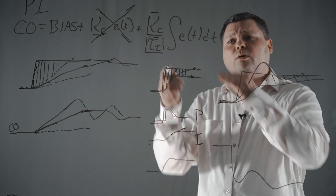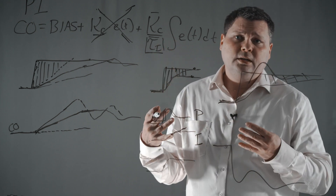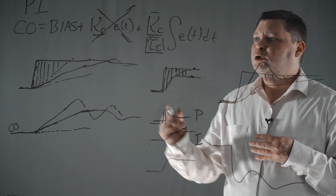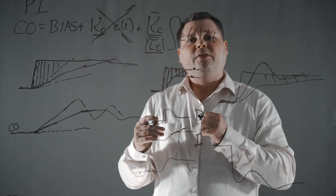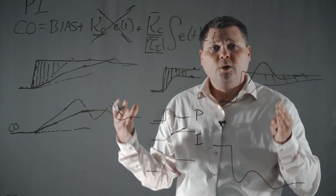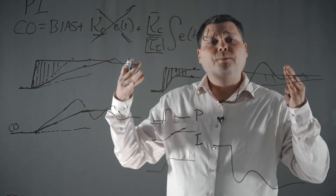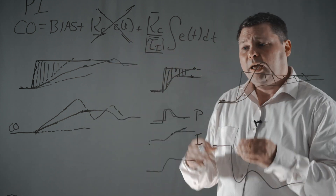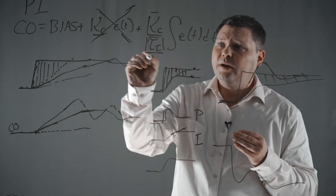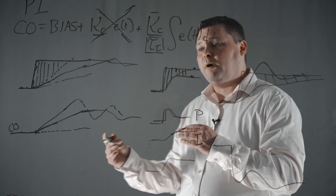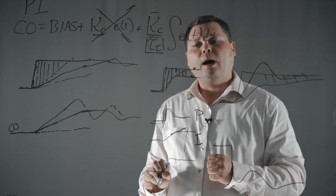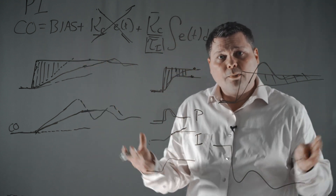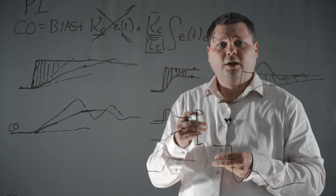You get rid of the offset, but the integral action does increase the likelihood that your process will start to oscillate. So proportional and integral — you add those together and you get the PI controller, which is the most common form of the PID equation. In this web series, we reviewed the impact of the integral tuning parameter on the shape of the controller output and what the integral action does to the PI controller to get rid of the offset. Thank you for joining me.